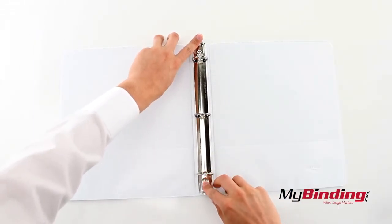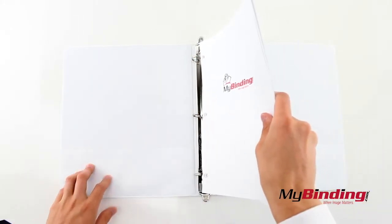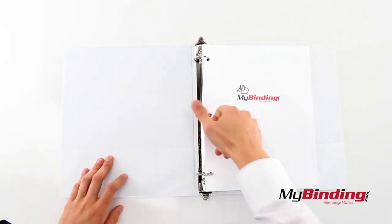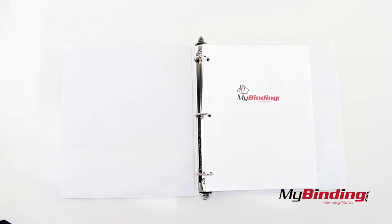Open the rings by pressing on the side tabs, then insert your three-hole punched paper into the rings. Close them up and you're ready for some page flipping.